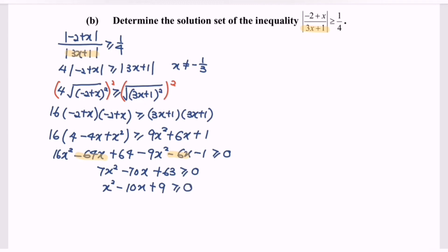Next, what we have to do is factorize the expression. So x squared minus 10x plus 9 factors as (x minus 9) multiplied with (x minus 1) greater than or equal to 0. Kindly note that x cannot be equal to negative 1 over 3.